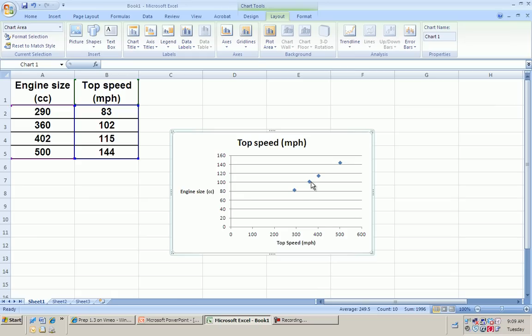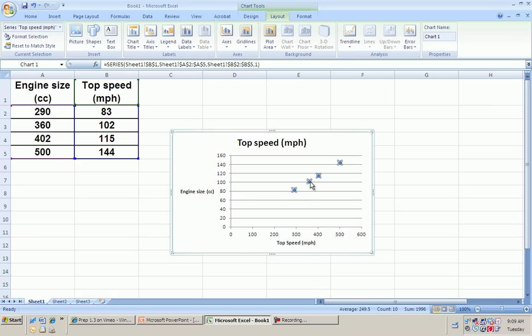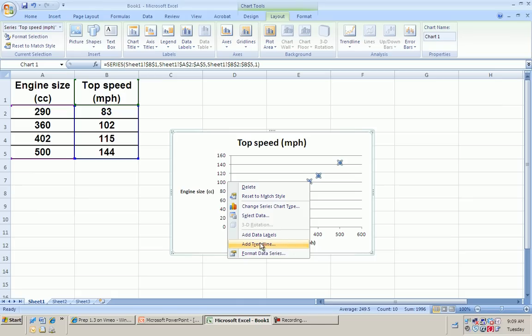Now I'm going to show my line. So I left-click on my points. I right-click on my points. And I'm going to add a trend line. Ba-bam. There we go.